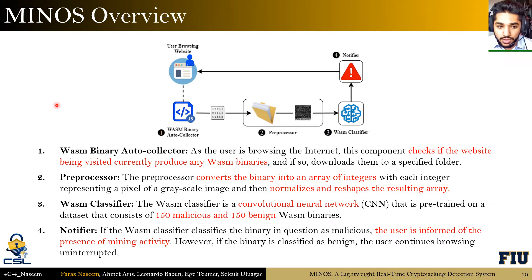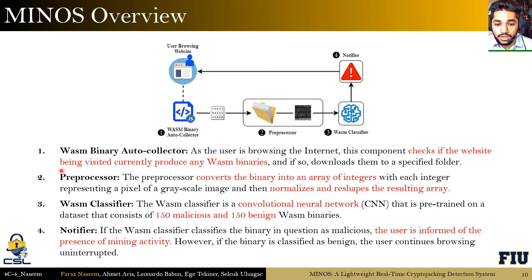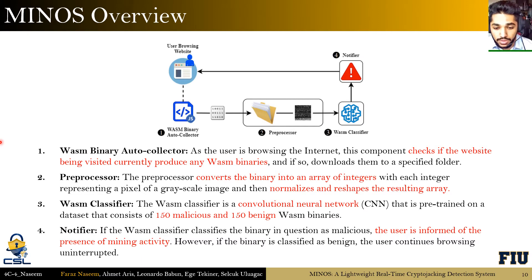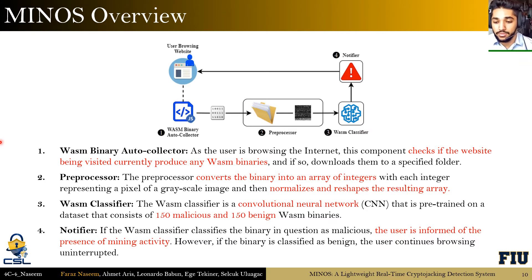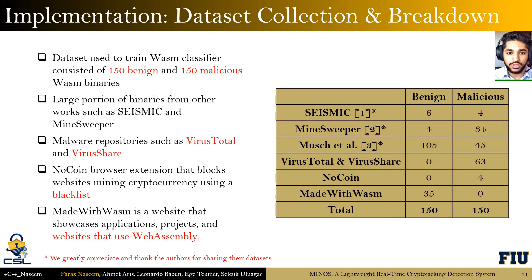An overview of our Minos framework: it consists of four components. The first is the WebAssembly binary auto-collector, which checks if the website being visited produces any WebAssembly binaries and, if so, downloads them to a specified folder. The preprocessor converts each binary into an array of integers, then normalizes and reshapes the array. The WebAssembly classifier consists of a CNN pre-trained on a dataset of 150 malicious and 150 benign WebAssembly binaries. Finally, the notifier takes predictions from the classifier — if any prediction is malicious, the user is informed; if benign, the user continues browsing uninterrupted.